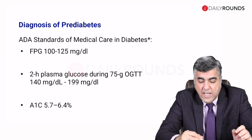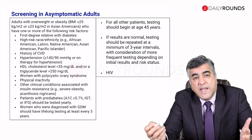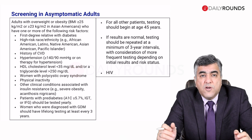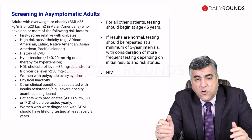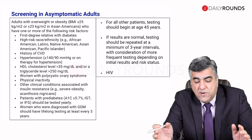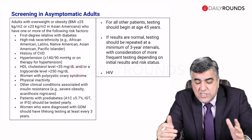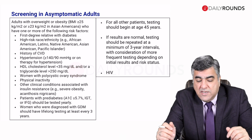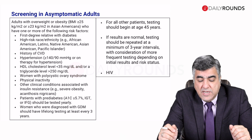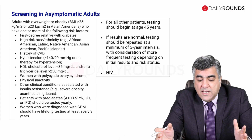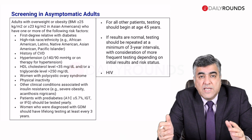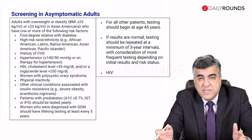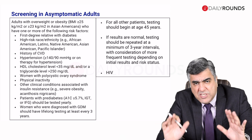The recommendation for screening in asymptomatic adults: adults who are overweight or obese with a BMI greater than or equal to 25 — or in Asians, 23 — and have one or more risk factors. These include a first-degree relative with diabetes, or high-risk race or ethnicity such as African Americans, Latinos, Native Americans, Asian Americans, Pacific Islanders, or Asians in general.